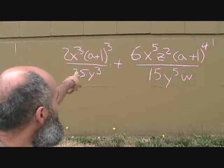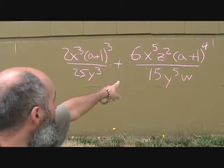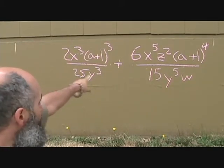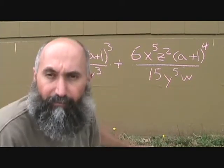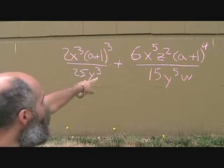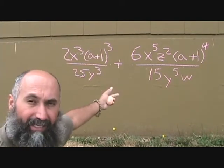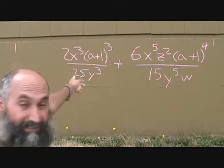Over here, we've got 2x cubed, 6x to the power of 5, and let's deal with the 2x cubed and 6x to the power of 5 right off. So between 2 and 6, we can take out a 2, between x cubed and x to the power of 5, we can take out x to the power of 3.